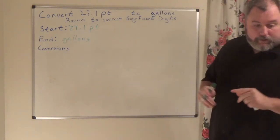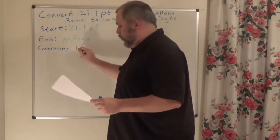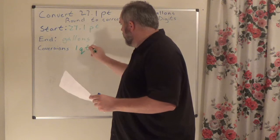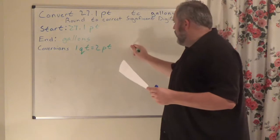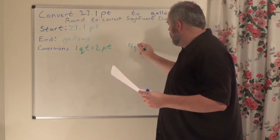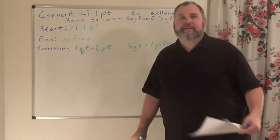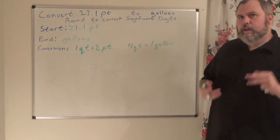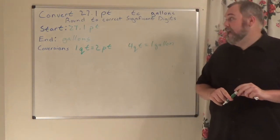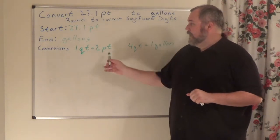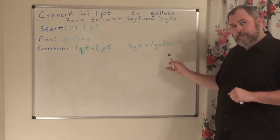My conversion factors were: one quart is equal to two pints, and four quarts are equal to one gallon. In this case, I have to go from pints to quarts and then from quarts to gallons.